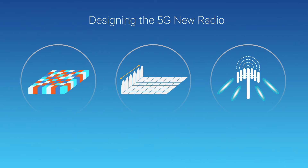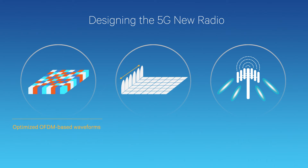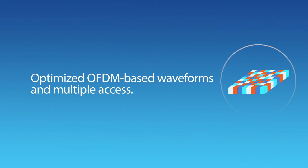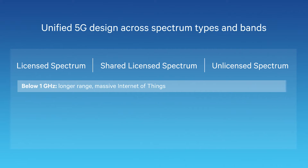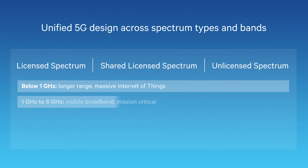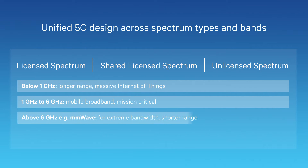The unified air interface has three main components: OFDM-based optimized waveforms and multiple access, a common flexible framework, and advanced technologies. From a 5G unified platform, one of the key things is addressing a wider variety of spectrum bands. At the same time we're also bringing in new higher frequency bands — not only bands below 1 GHz, bands from 1 to 6 GHz, but even higher frequency bands above 6 GHz.